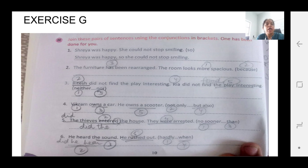So Shreya was happy. So she could not stop smiling. Number 2. The furniture has been rearranged. The room looks more spacious. You have to use because. Because of the reasoning. So how will you write?